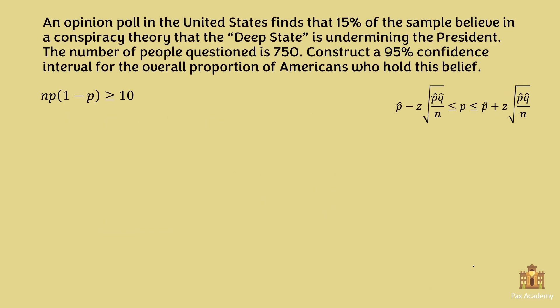So let's look at the example. An opinion poll in the US finds that 15% of the sample believe in the conspiracy theory that the deep state is undermining the president. The number of people questioned is 750. Construct a 95% confidence interval for the overall proportion of Americans who hold this belief.